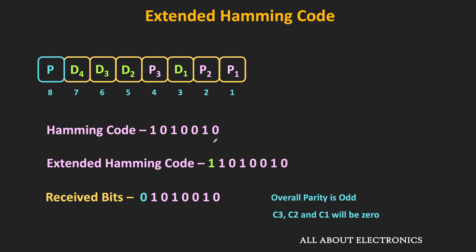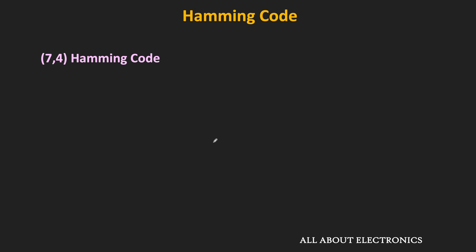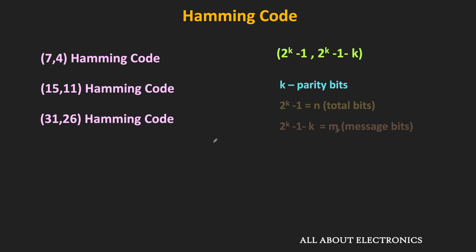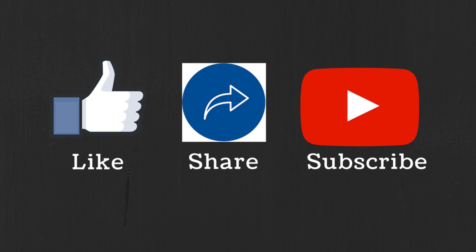This extended Hamming code can correct one error and detect up to two errors, and it is commonly used in memories for error correction. So far we have discussed the 7-4 Hamming code. Similarly, we can also have the 15-11 or the 31-26 Hamming code. Mathematically, these can be written as (2^k - 1, 2^k - 1 - k), where k is the number of parity bits. In future videos, we will also see the circuit for generating and decoding this Hamming code. I hope you understood the Hamming code in this video. If you have any questions or suggestions, let me know in the comments below. If you liked the video, hit the like button and subscribe to the channel.